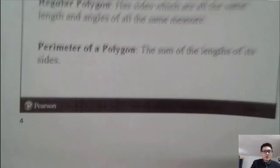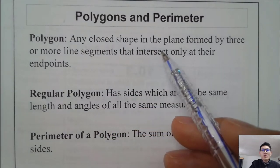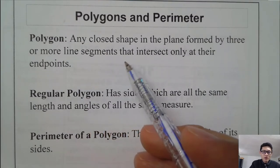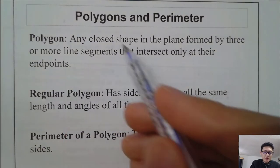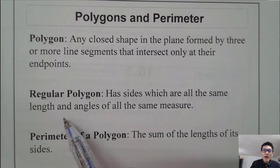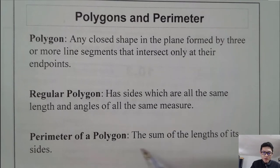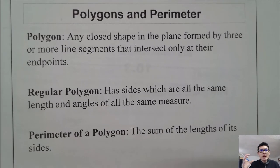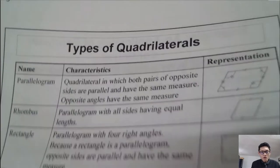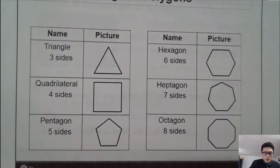Let's go over the first slide about polygons and perimeters. A polygon is any closed shape in the plane formed by two or more line segments that intersect only at their endpoints. For a regular polygon, all sides have the same length and all angles have the same measure. The perimeter of a polygon is the sum of the lengths of all its sides.